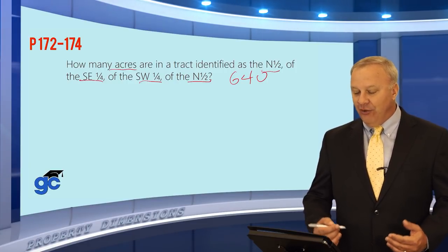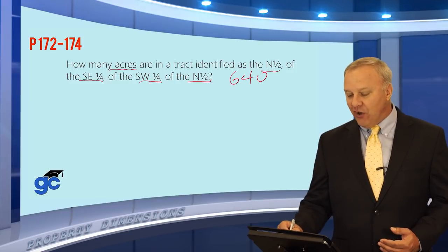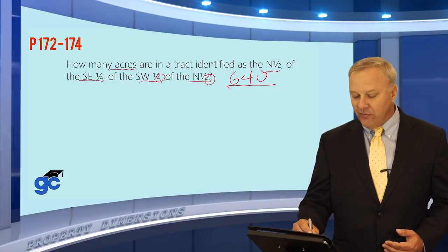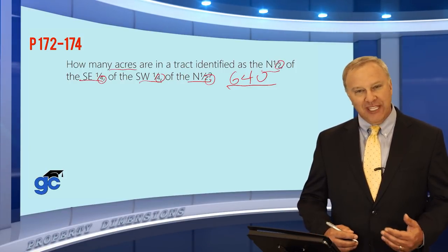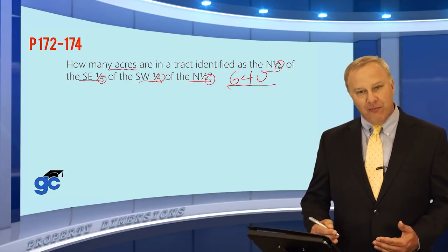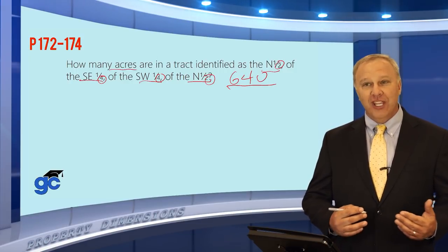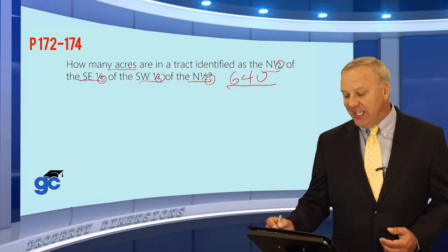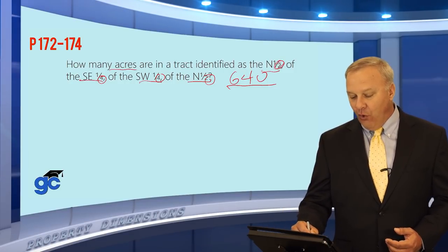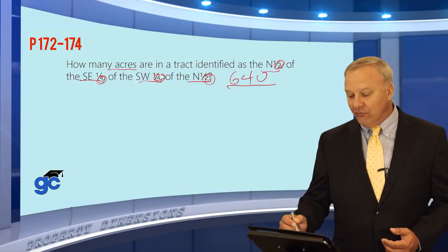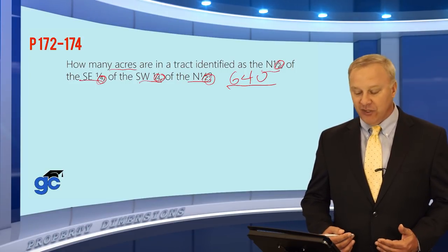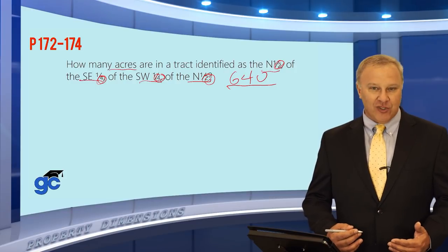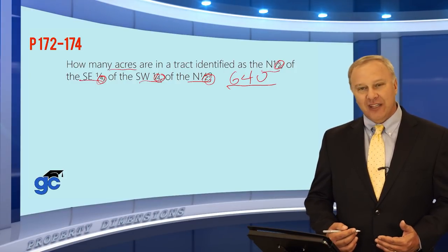So for this question, we're starting with 640 acres and figuring out how big the identified piece is. We start with the section and simply divide by the bottom numbers. Whether you start from the beginning or the back doesn't matter, because the numbers are 2, 4, 4, and 2 — mathematically it makes no difference.